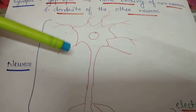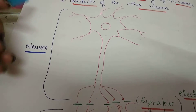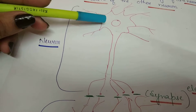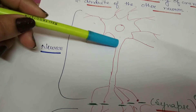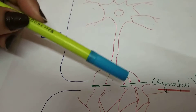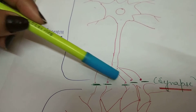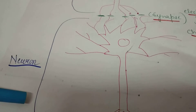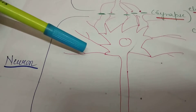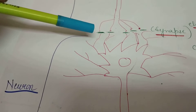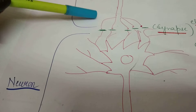These are dendrites. And this is a cell body having nucleus. And this part is axon, which transmits signal from cell body to the nerve ending. And these are nerve endings. And this is another neuron, which is also having dendrites that receive the signal from the first neuron.